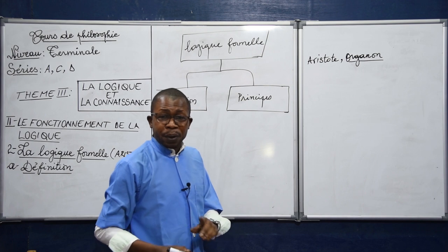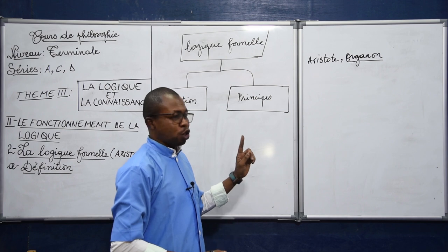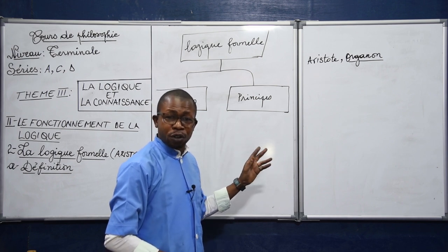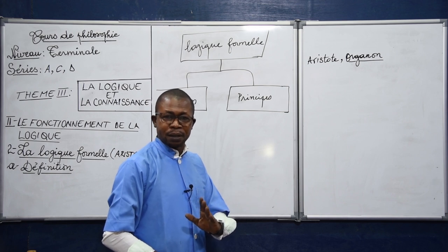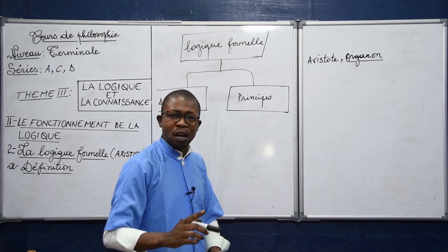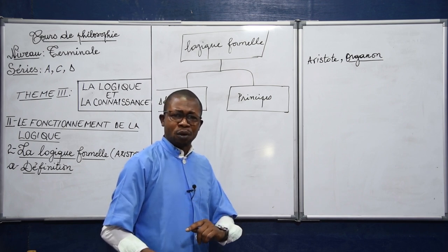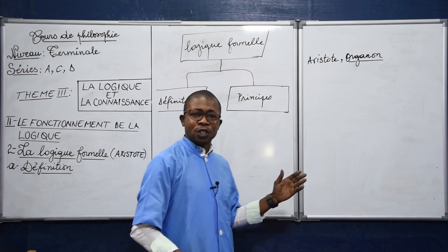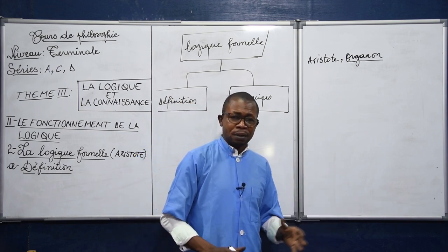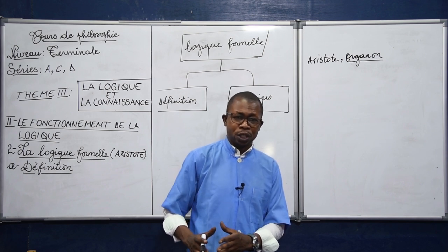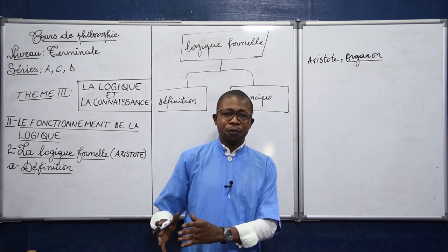Il faut retenir qu'Aristote n'a pas inventé le mot logique. De son vivant, il parlait de la syllogistique et de l'analytique. Le mot logique est né au 3e siècle avant notre ère, c'est-à-dire un siècle après sa mort, chez les stoïciens. Mais ce sont ses successeurs qui vont qualifier ses travaux de logique — non pas n'importe quelle logique, mais la logique formelle.